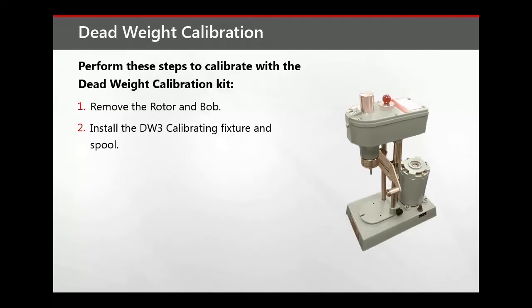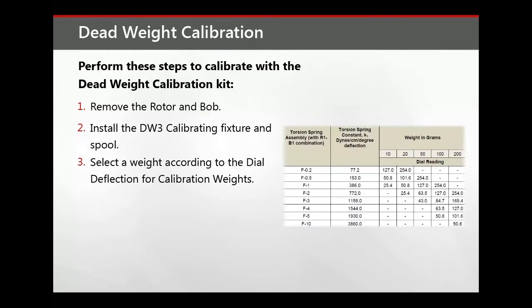Install the calibration fixture and spool. Select a weight according to the dial deflection for calibration weights. This can be found in Table 6.1 in the Model 35 Manual.